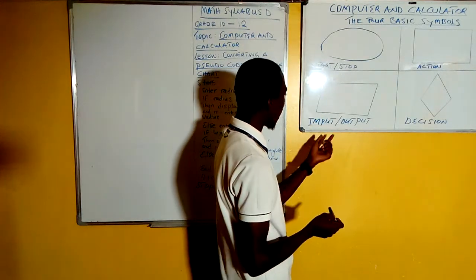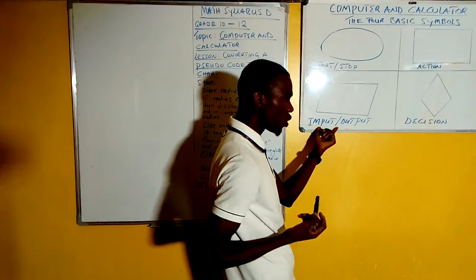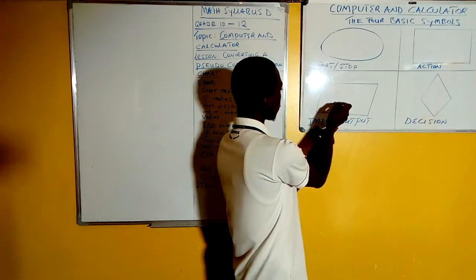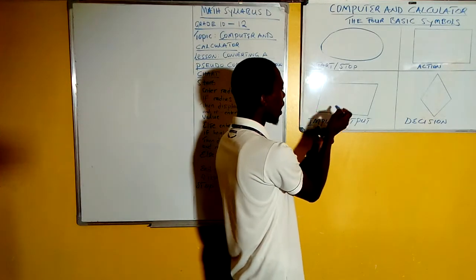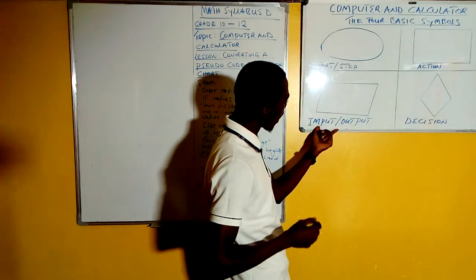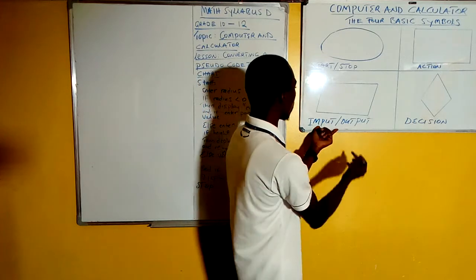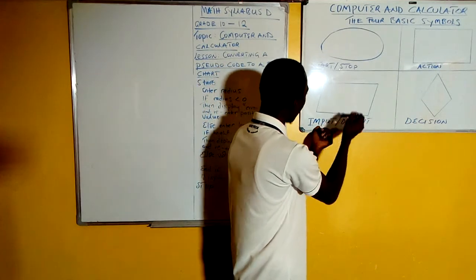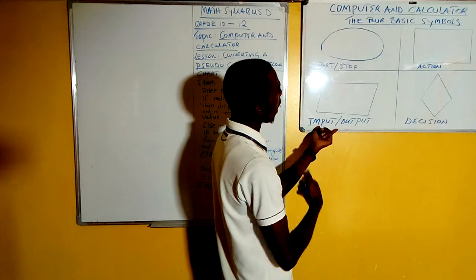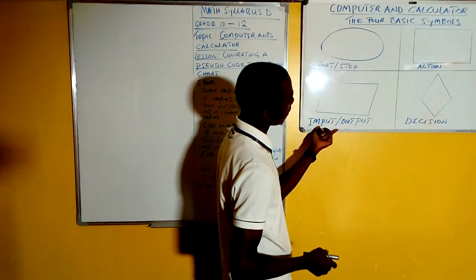Then we also have an input. When you're trying to show the inputs, this is where you put them in. This is a parallelogram. When you're also trying to write the outputs, the things being displayed by the computer, you have to write them in this box as well, another box.